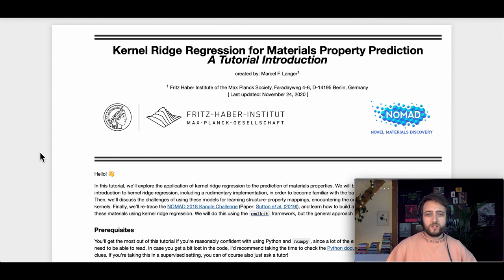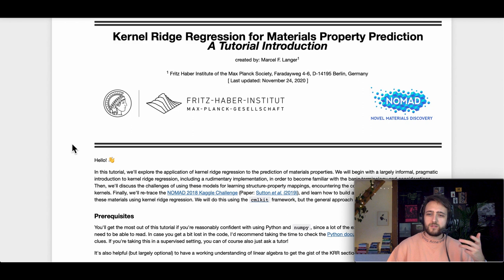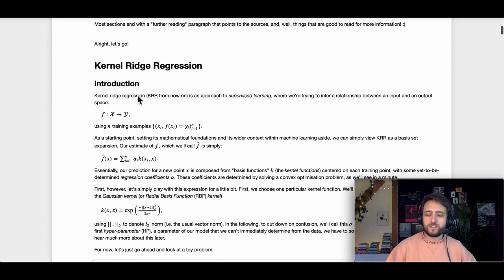In general, this tutorial has basically three parts. First, we will look at kernel ridge regression in general, and here the tutorial is trying to give a pragmatic introduction. Not too much mathematics or background, just really trying to get to the bottom of what it actually is and how it works. Then in the second part, we are looking at what you need to do to use kernel ridge regression with materials. We look at how to describe crystal structures in order to do regression on them. Finally, we are looking at the NOMAD 2018 Kaggle Challenge dataset. We go through all the steps of developing a model, finding the parameters, and then looking at the results.